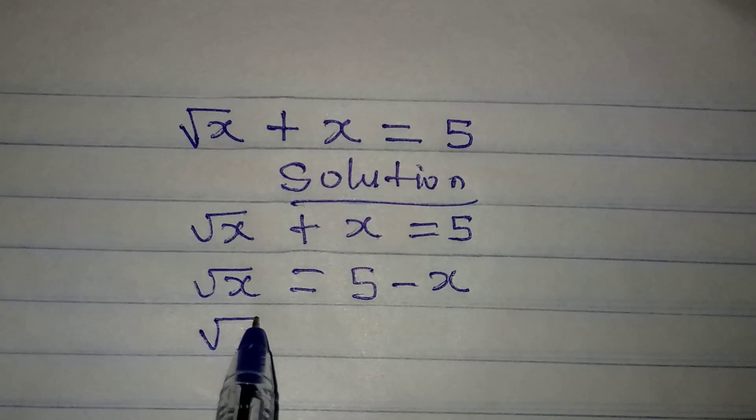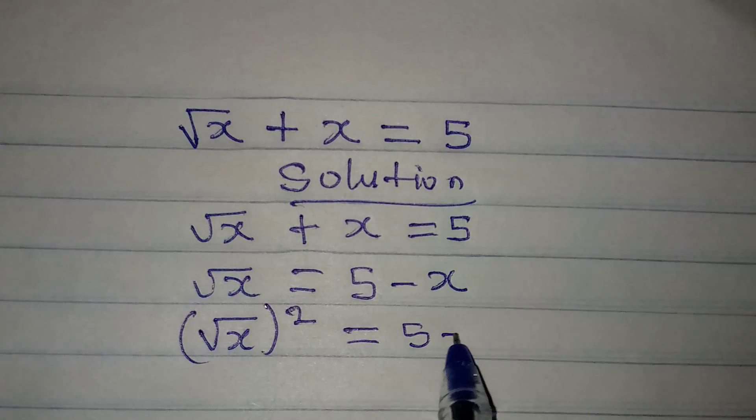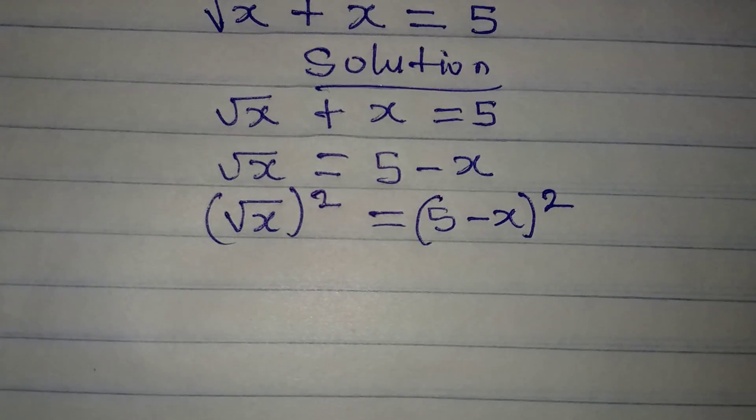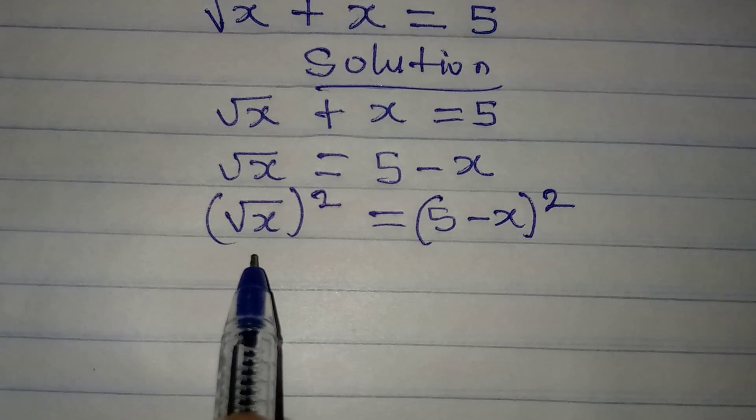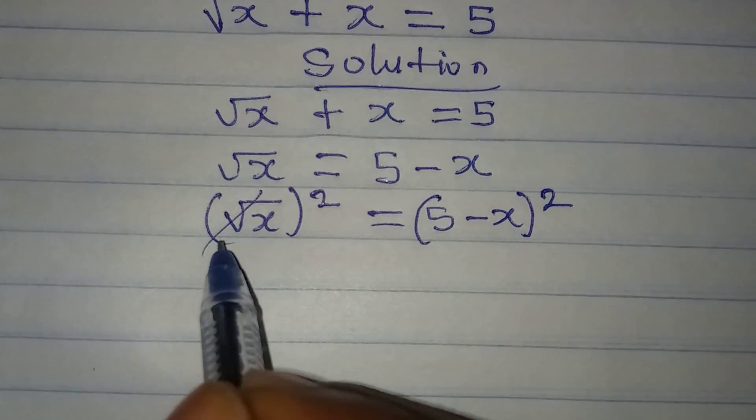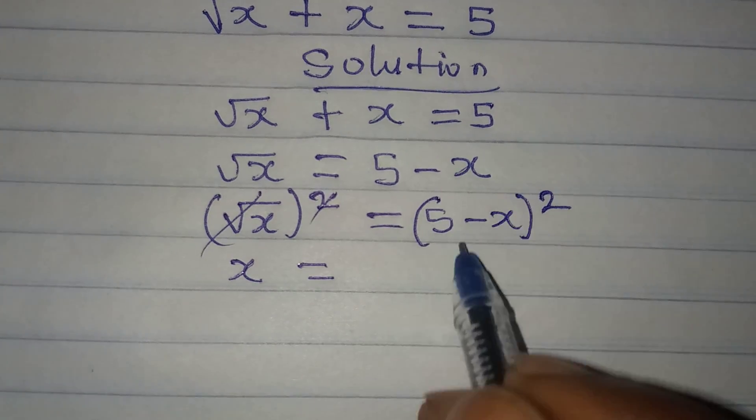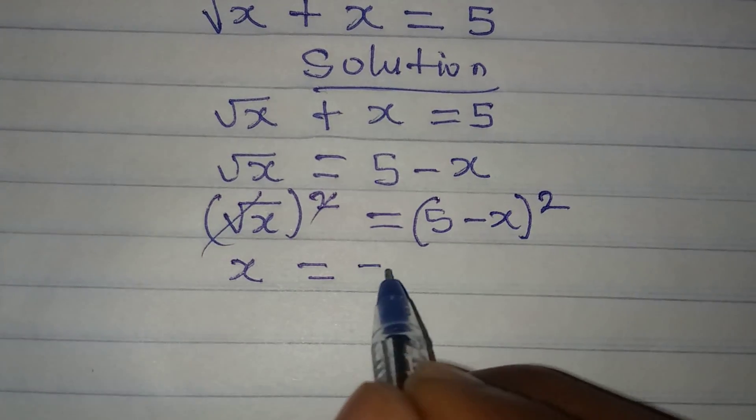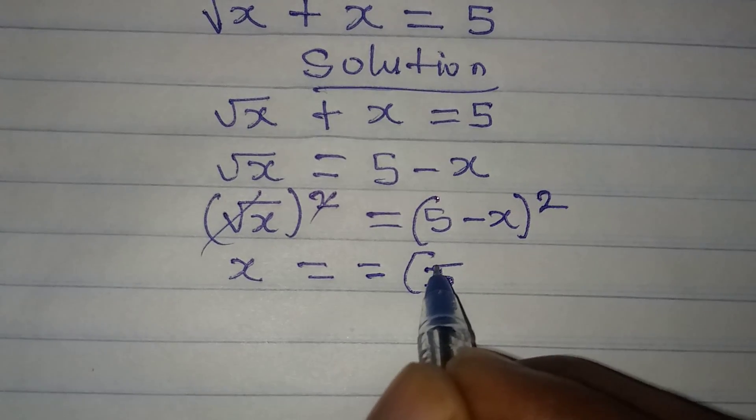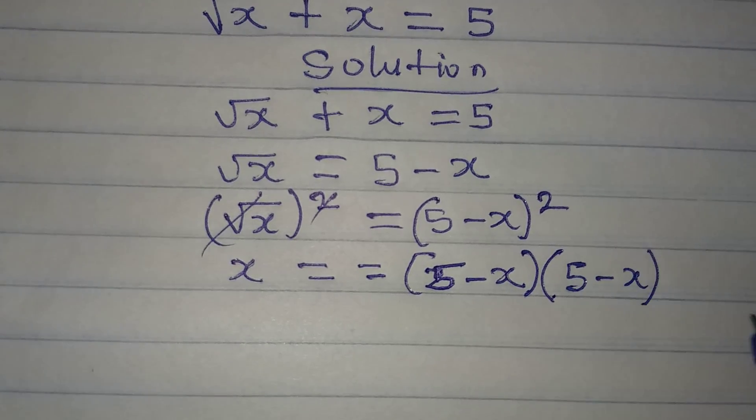Squaring both sides, so we have x equal to 5 minus x squared. I am squaring both sides because I want to remove the square root from here. x will be equal to what we have here. Now let's show all the steps. This is 5 minus x and then we have 5 minus x again.